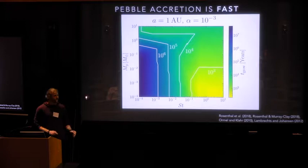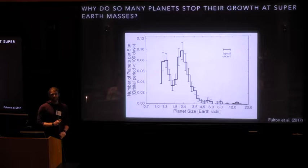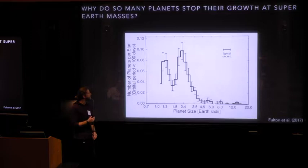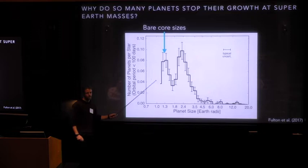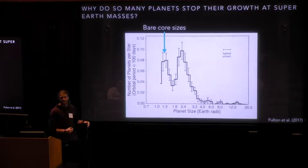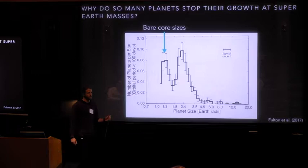So large cores can accrete pebbles and grow at extremely rapid rates. So one reason in particular this is very interesting is that we see a lot of planets right in this mass range. So this is a plot from this Fulton et al. paper that's looking at the sizes of Kepler planets, and we see this bimodal distribution, which is commonly interpreted as being a result of photo-evaporation. So what that would mean is that these planets over here are the bare core masses, and the radii on the right have some gas envelopes, and so they have not been photo-evaporated.